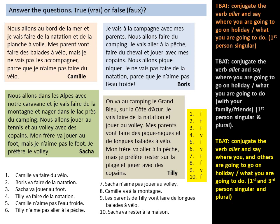Number nine: Tilly's parents are going to do long bike rides — that is true. It says mes parents vont faire des pique-niques et de longues balades à vélo. Number ten: Sasha's going to stay at home — that is false. Nous allons dans les Alpes — we're going to the Alps, in the caravan. No mention of staying home.